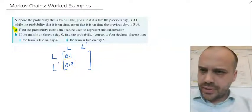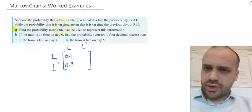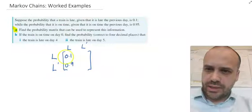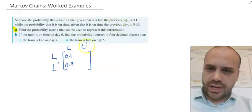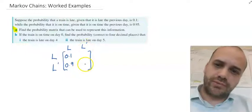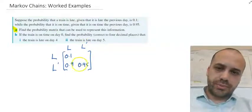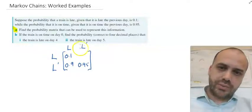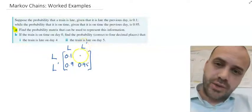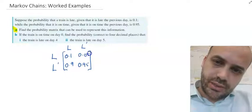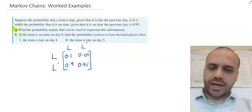Let's see. While the probability that it is on time, not late, given that it is on time the previous day, not late, is 0.95. Which, of course, means that the probability that it is late, given it was not late the previous day, would be 0.05. We have done part A. We have found a probability matrix to represent this information.